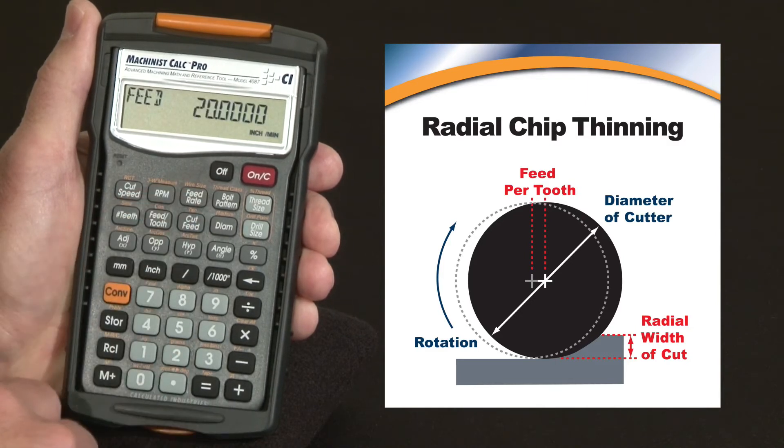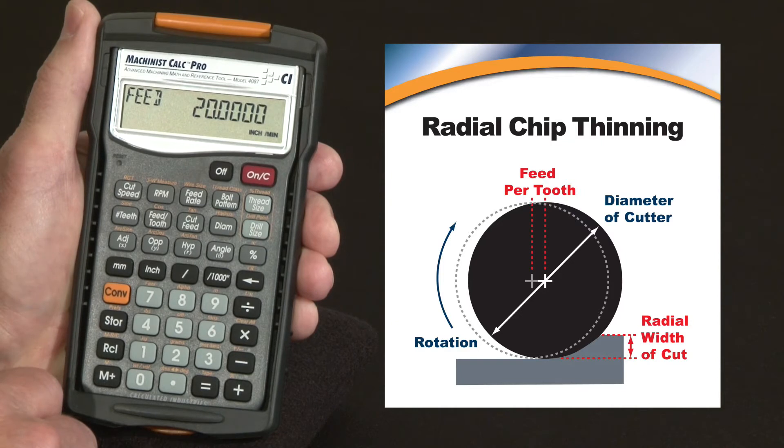Calculating the feed rate, we see that we can run that material through at about 20 inches per minute, which would be great as long as your cut depth is at least half the diameter of that tool.